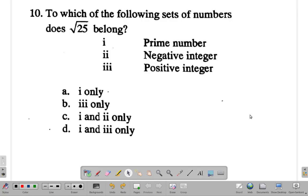Let's see what this is all about. To which of the following set of numbers does the square root of 25 belong: prime, negative integer, and positive integer? Answer this question and we'll come back. All right, trust you've paused.